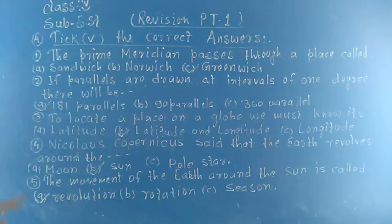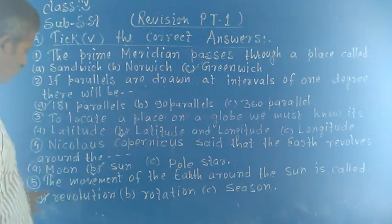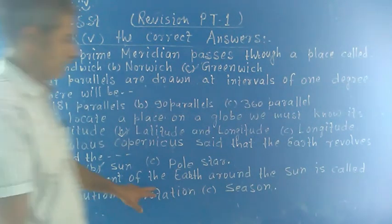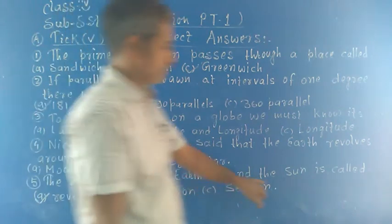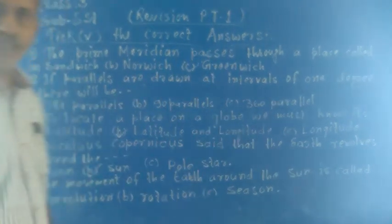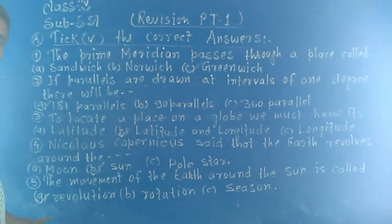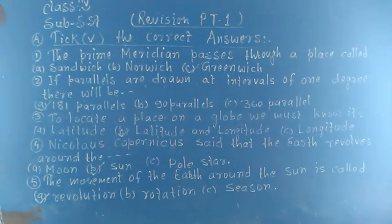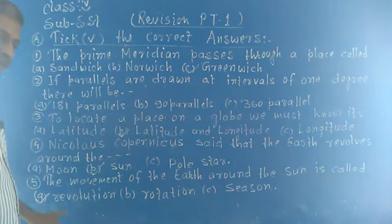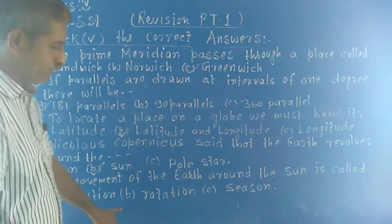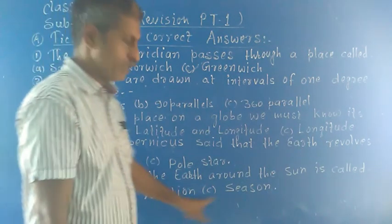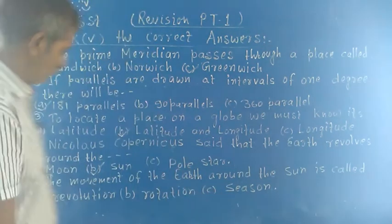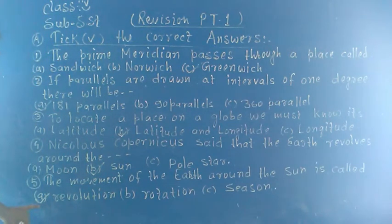Question number 5: The movement of the earth around the sun is called. Options: A, revolution; B, rotation; C, season. The answer is revolution.